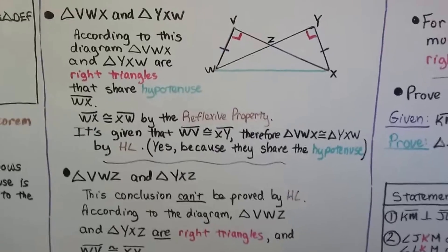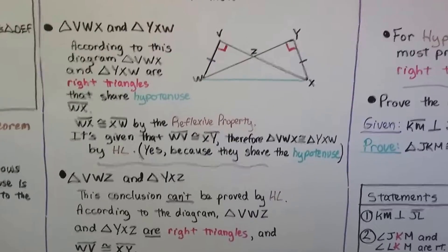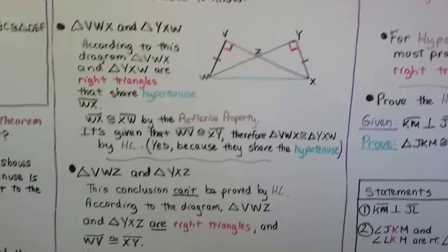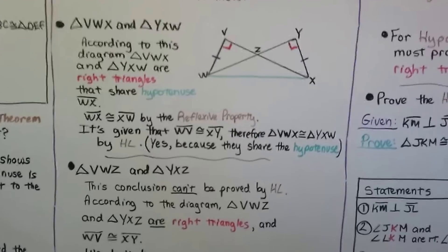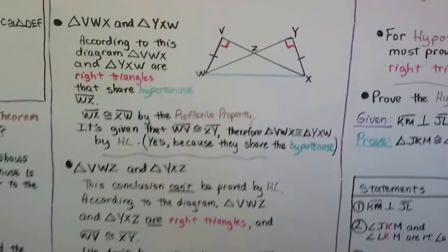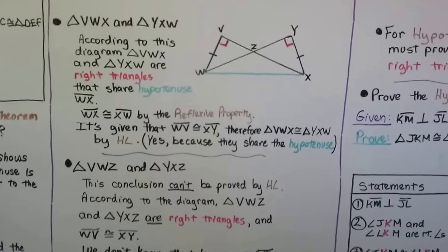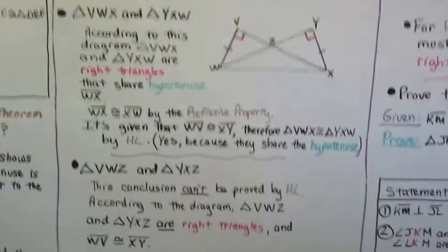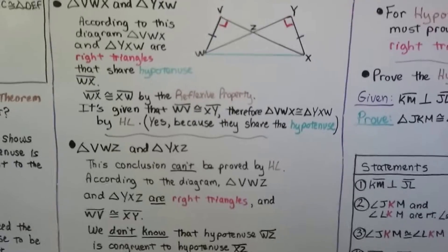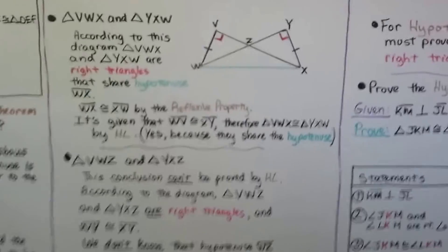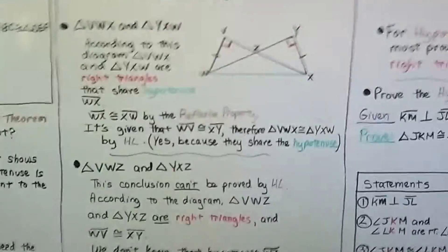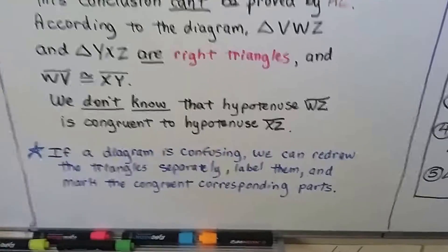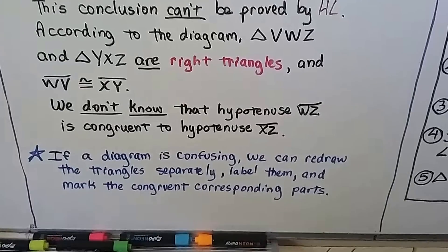For triangle VWZ and triangle YXZ — that's this little triangle and this little triangle — the conclusion can't be proved by HL. According to the diagram, they are right triangles, and segment WV is congruent to segment XY. But we don't know that the hypotenuse segment WZ is congruent to hypotenuse XZ. If a diagram is confusing, we can redraw the triangles separately and label them and mark the congruent corresponding parts.